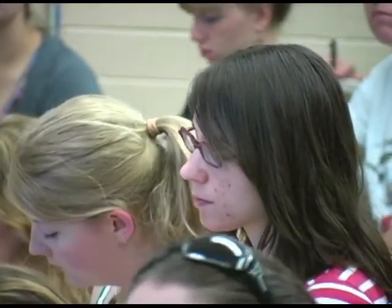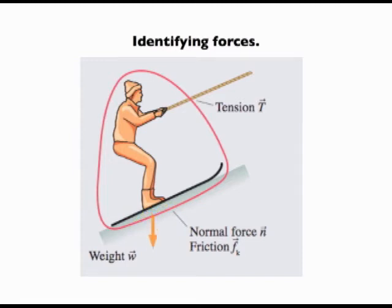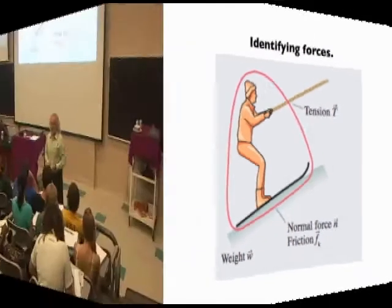This is an example of a force identification diagram, talked about in the book. You draw a line around something and ask where are all the places where things touch this object — where are all the places that forces can be exerted on it? Forces have to have agents that cause them. On a skier on a rope tow, there's a tension — a rope which pulls one way. There's a normal force from the slope pushing up, a friction force because he's sliding, and there's also the weight force, which always exists.